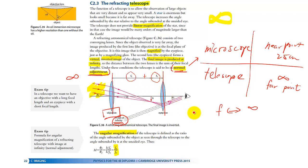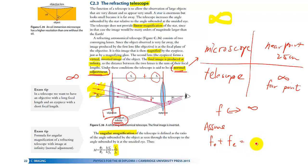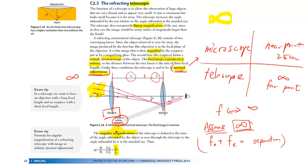This is a relationship you will need to use. I really want to remind you that the assumption behind F_o plus F_e equaling the separation of the two lenses is only true because of an underlying assumption: it only holds when the final image is formed at infinity. So if you are not forming it at infinity, this relationship should not hold.